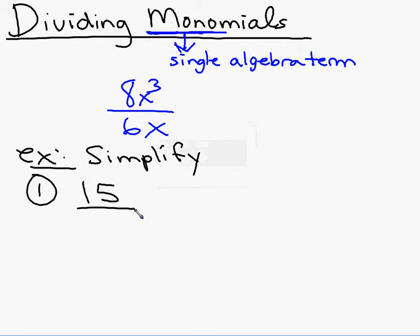If we have 15 over 21, a basic fraction, to simplify it I need to divide the top and bottom by the biggest number that will go into both of them. In this case, what is that number? Three. So if I divide both by three, I get a simplified fraction which is 5 sevenths.